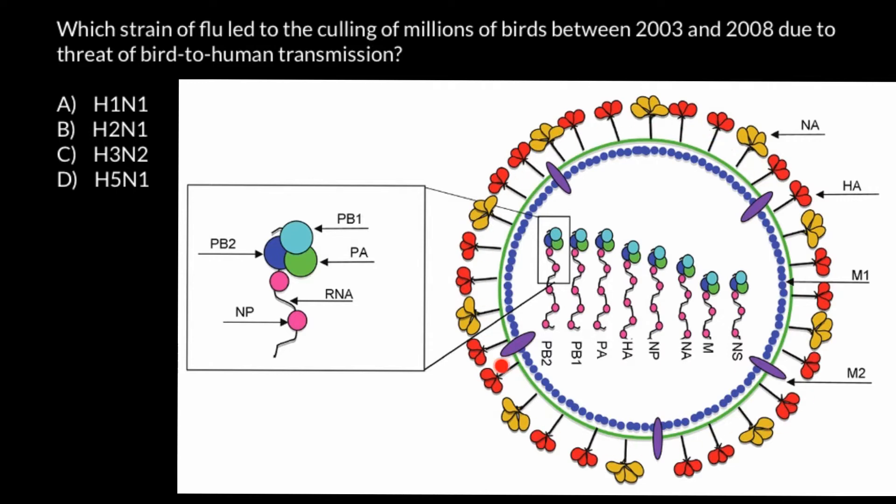One is neuraminidase and another is hemagglutinin. HA or H stands for the first protein, and NA or N stands for the second type. Both these proteins are surface proteins and cause immune response from our organism or the host, which can be many other animals and birds.